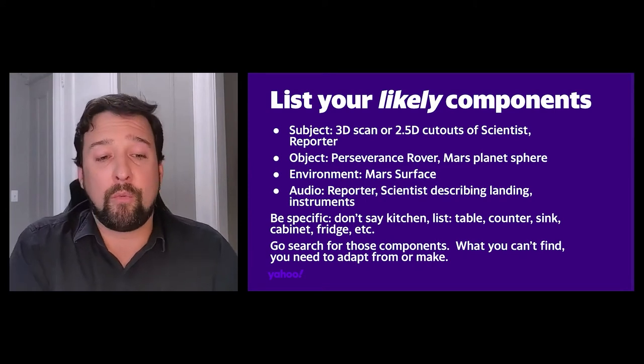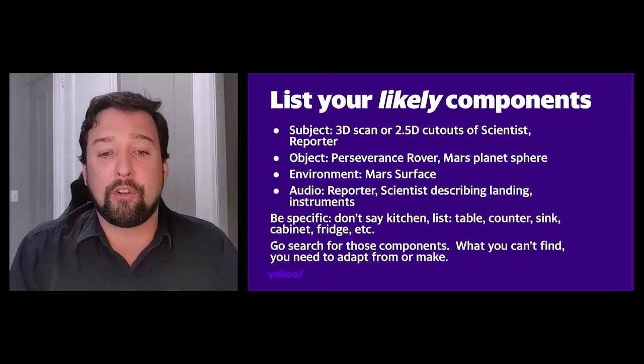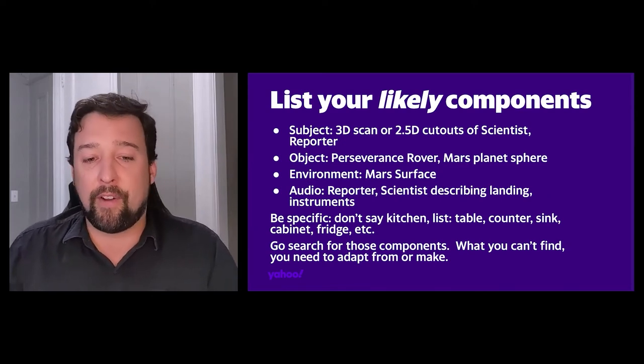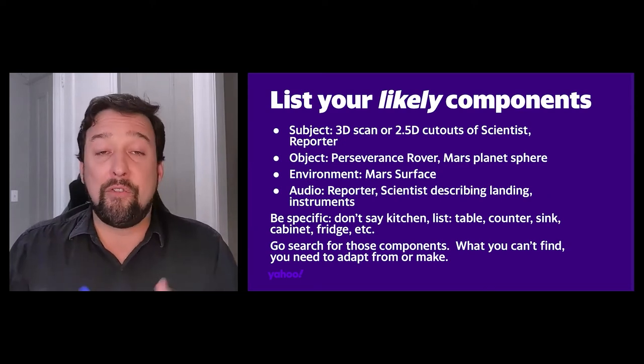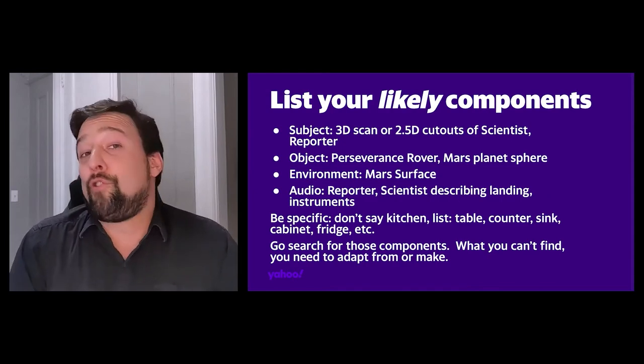In the next video, we'll talk about how you go searching libraries to find what you can find. Remember: if you can't find something, you have three choices. You have to make it, you have to pay someone to make it for you, or you need to adapt your vision to not need it anymore. This list will quickly tell you, as you go searching in the next episode, whether you can find these things or not, and you just keep adjusting your vision based on what you found and what you didn't.